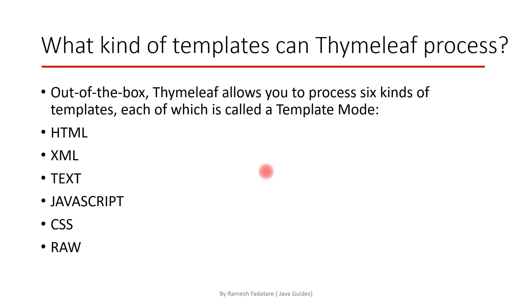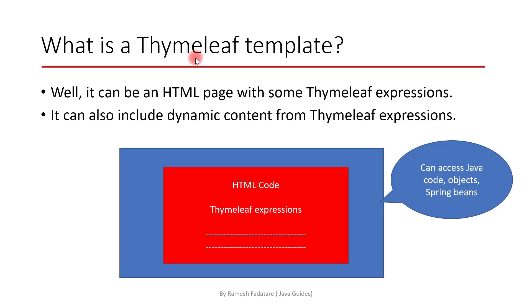Now the question is: what kind of templates can Thymeleaf process? Out of the box, Thymeleaf allows you to process six kinds of templates. These are: HTML, XML, Text, JavaScript, CSS, and Raw — where Raw means plain text.